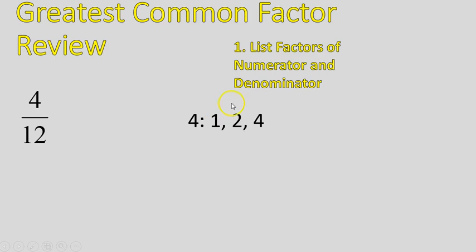Remember, we did this by doing a rainbow, 1 times 4, 2 times 2, but you can do it in any way, as long as you're listing the factors, every factor of the number. Here are all the numbers that multiply together to give you 12. 1 times 12, 2 times 6, 3 times 4. Those are all of the factors.